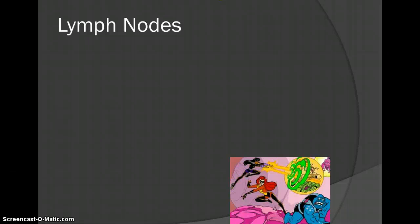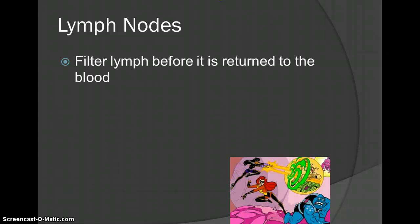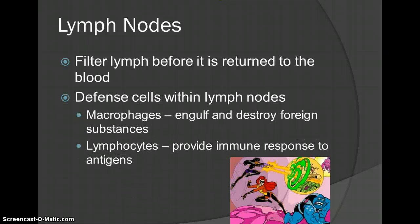There are also the lymph nodes, which filter the lymph before it's returned to the blood. There are two different types of cells in there. Macrophages — macro meaning big, phage meaning to eat — are big things that eat, engulfing and destroying foreign substances. Lymphocytes are going to provide that immune response to antigens. We'll talk more about these different immune responses — it's actually a much bigger deal than you probably ever thought.